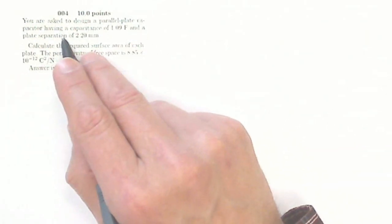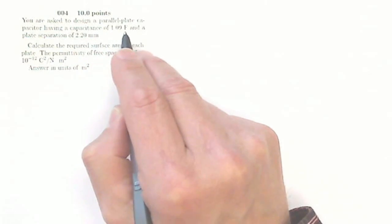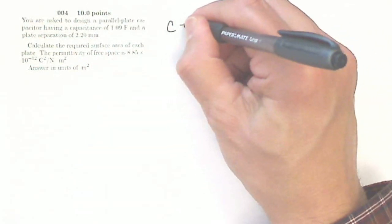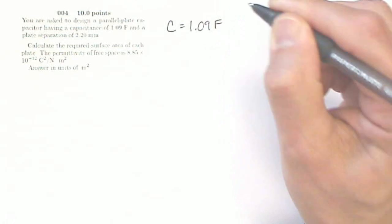It says, you are asked to design a parallel plate capacitor having a capacitance of 1.09 farads. So that's my capacitance, C equals 1.09 farads.